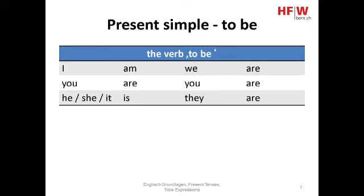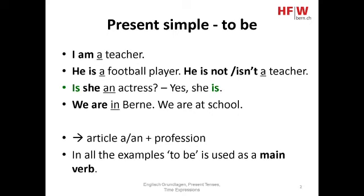Here we can see the structure of present simple tense. We use the verb 'to be'. With 'I', you use 'am'; with 'you', you use 'are'; and with 'he', 'she', or 'it', you use 'is'. For example: I am a doctor, you are a patient, he is a singer, she is a doctor.